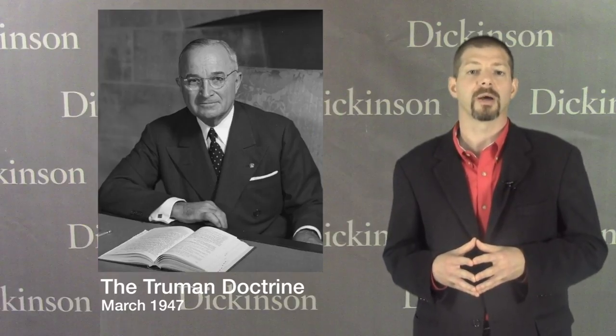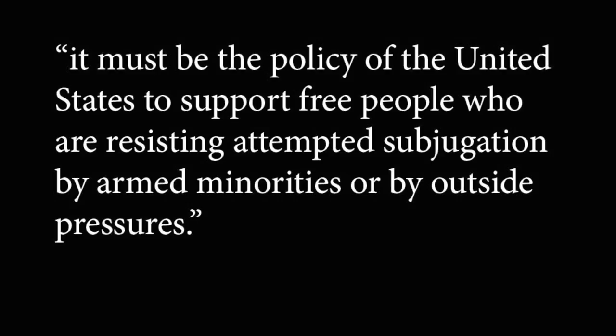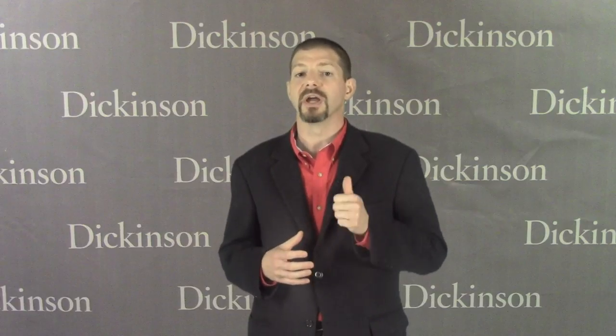The Truman Doctrine promised U.S. military and economic aid to Greece and Turkey to contain the spread of Soviet influence. Truman said, 'It must be the policy of the United States to support free people who are resisting attempted subjugation.' In short, Truman established U.S. foreign policy for the rest of the century. The United States would do everything possible, whether legal or not, to halt the advance of communism.